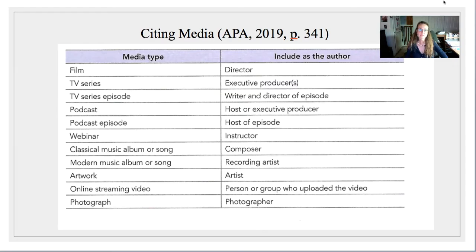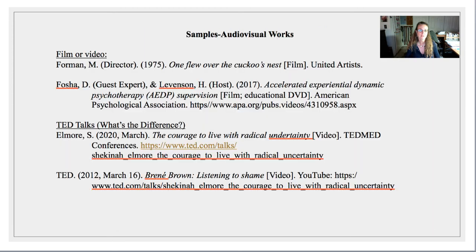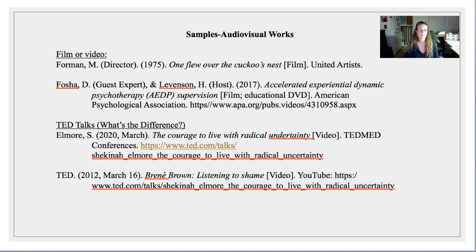If you're going to be citing from different kinds of media, the APA 7th edition does a great job showing how to cite from these different kinds of sources. I've given some specific examples here about how to cite — this is right out of the book, so feel free to reference that. Notice that for a TED Talk, one way explains how to cite it if you're getting it directly from the TED website, and another way would be if you're getting it from YouTube.